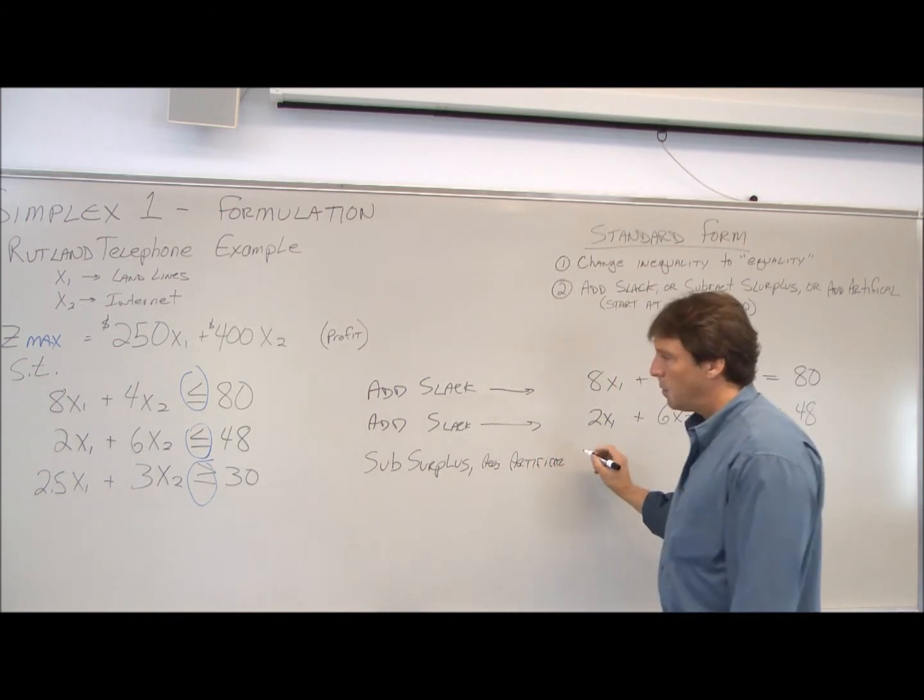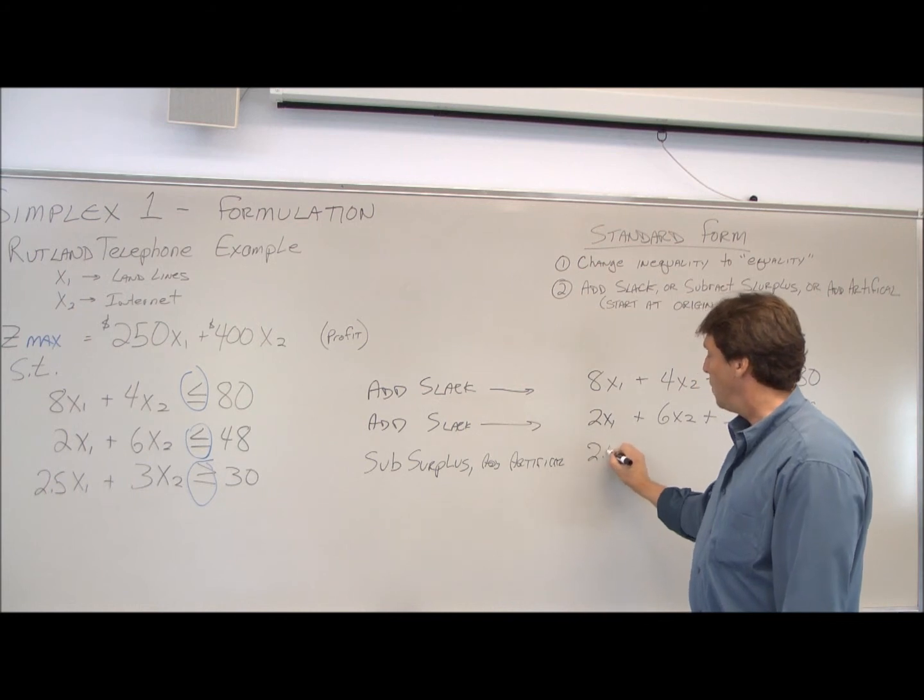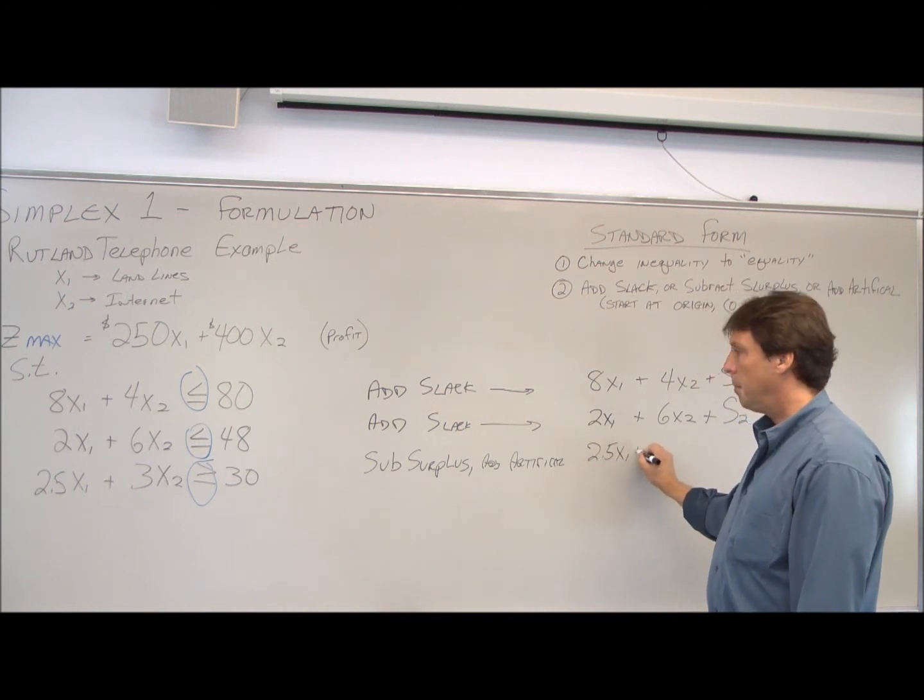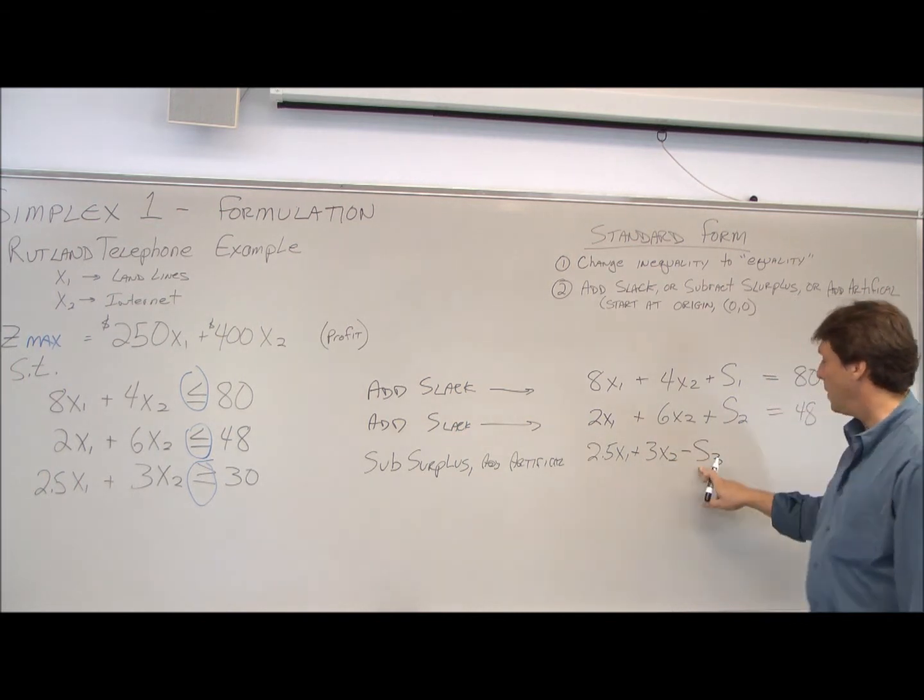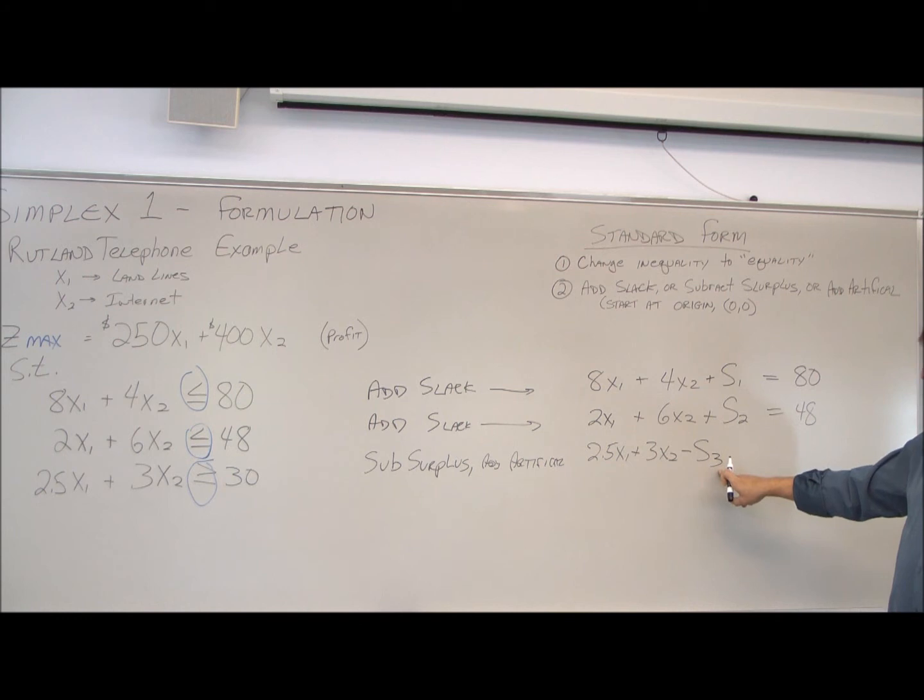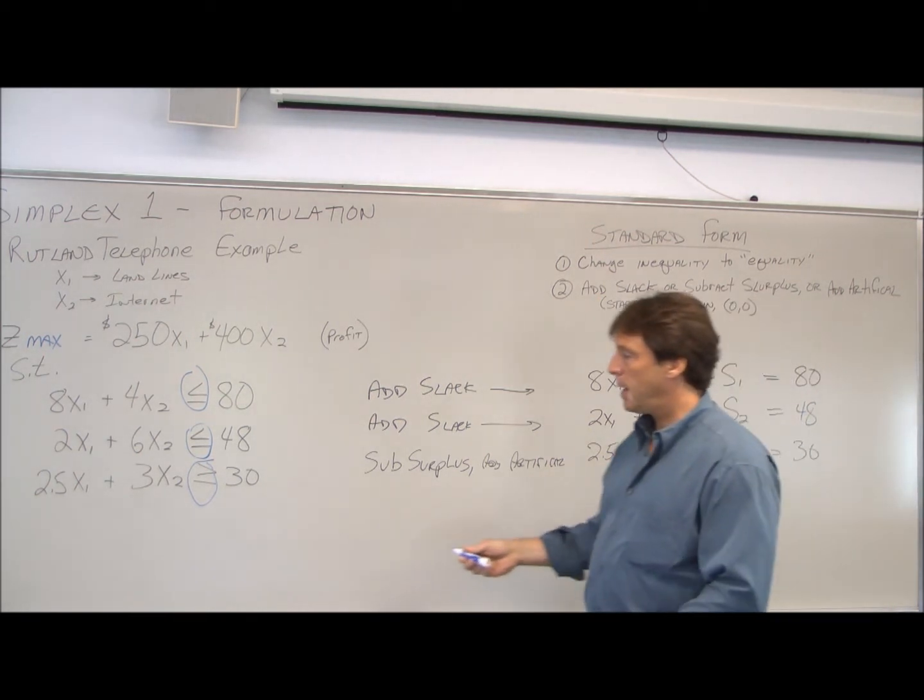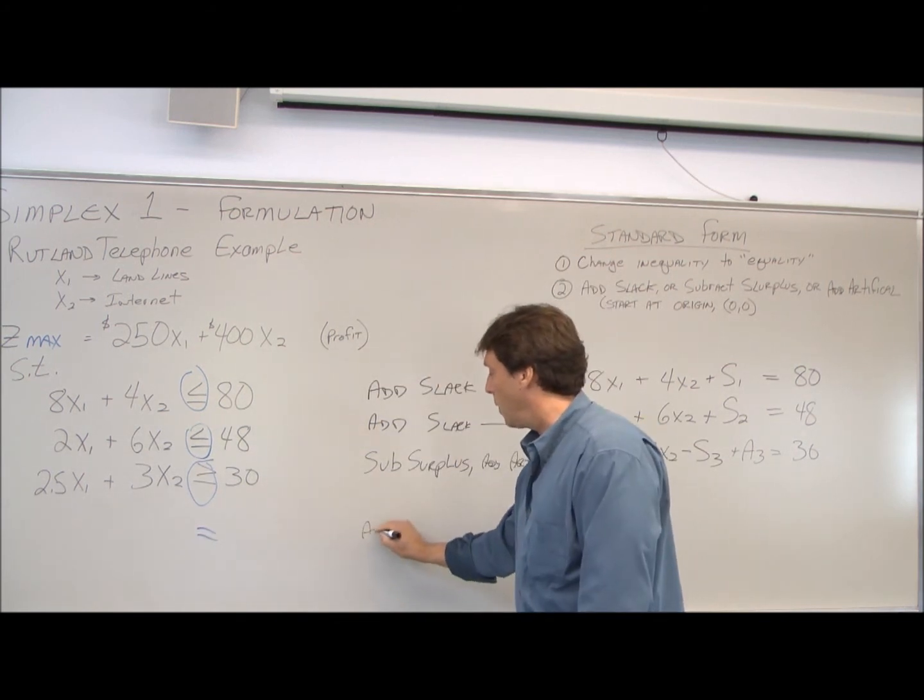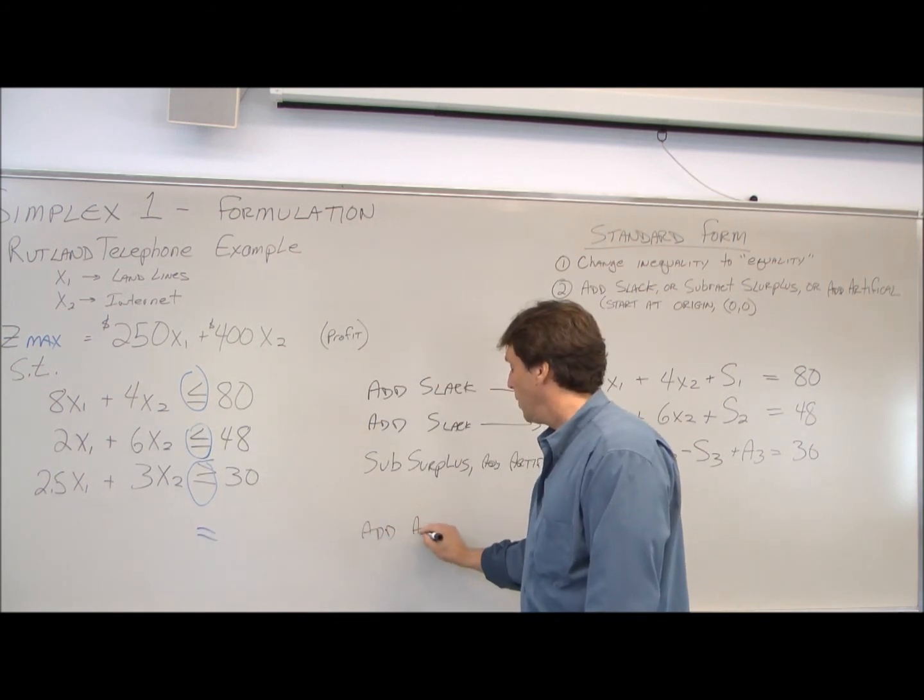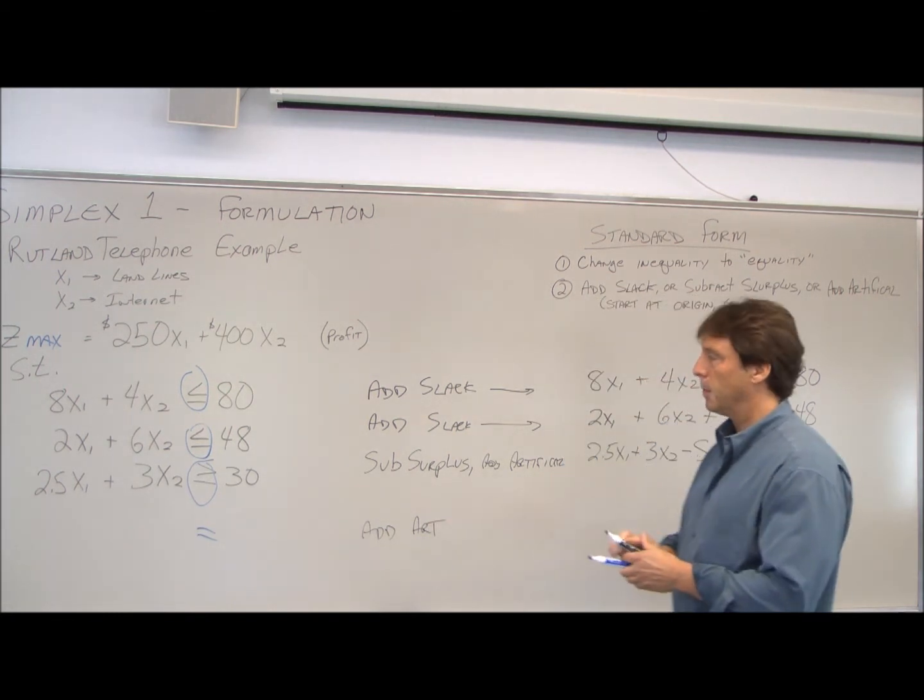So this would look like 2.5x1 plus 3x2 minus our surplus, using s3 notation, plus our artificial. If we just had an equals to, we would just add an artificial. We don't have one of those as a question.